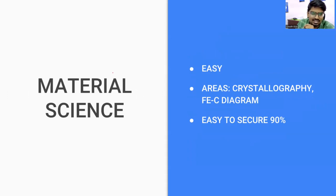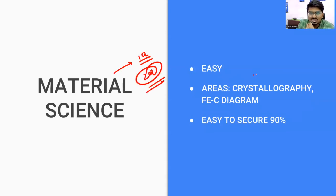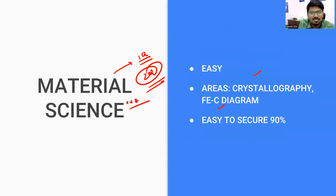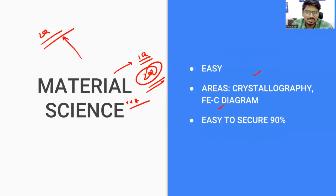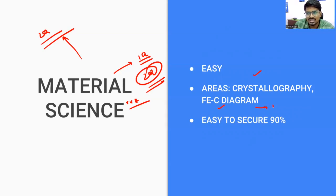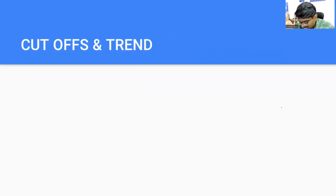One more change in the trend: usually only one question is asked from Material Science, but this time they asked two questions — one from crystallography and one from the iron-carbon diagram. Both are dead easy questions. This is a small change; there have been some past papers like 2017 or 2018 with two material science questions, so it is not entirely unprecedented. The iron-carbon diagram is likely one mark and crystallography two marks, but we'll confirm once the official paper is out.